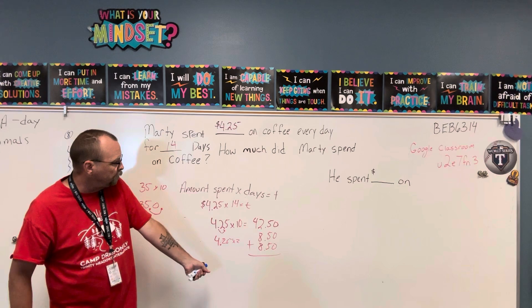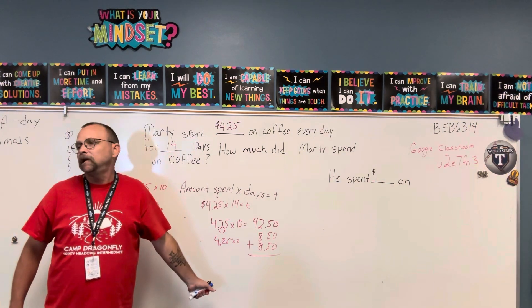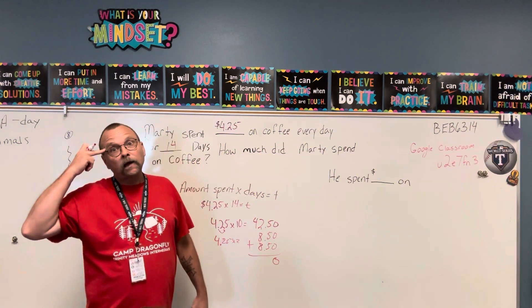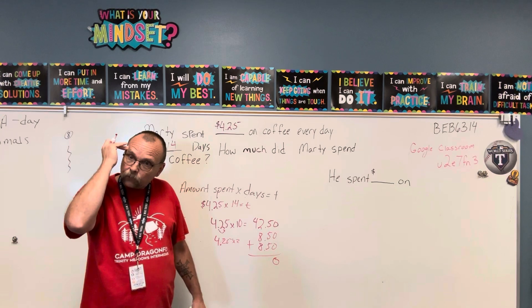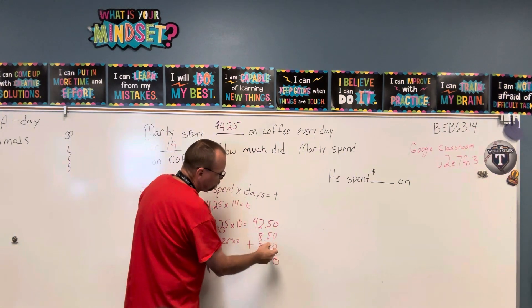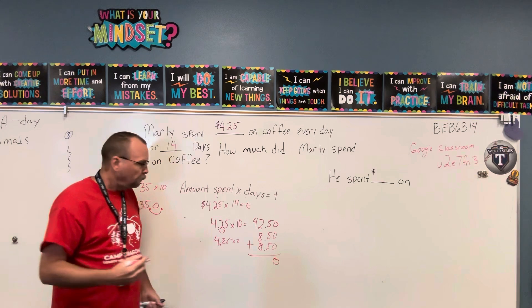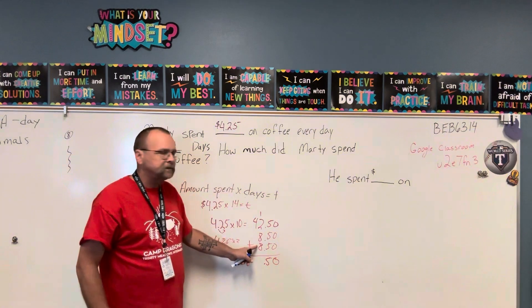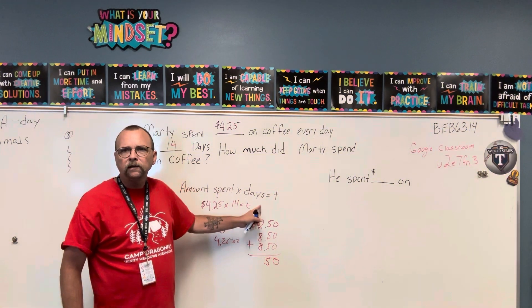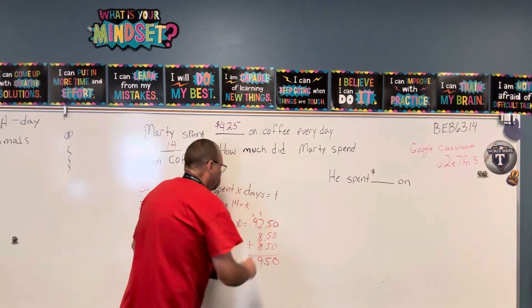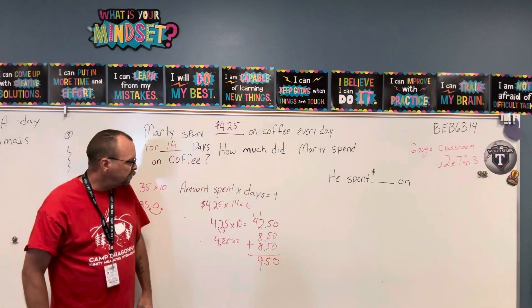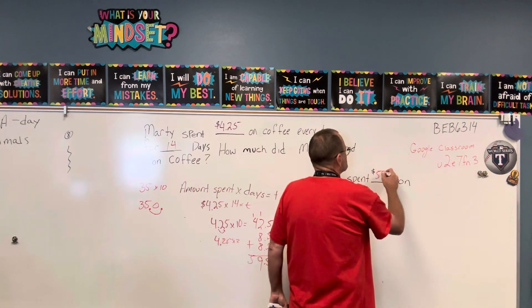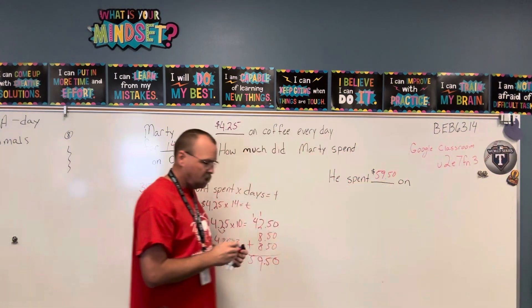The hardest thing I have to do now is add three numbers together. I have five, ten, fifteen tenths — that's five tenths and one whole. Eight and eight is sixteen, plus two is eighteen, plus one is nineteen. And then I carry the one, so now I have fifty-nine dollars and fifty cents. So he spent fifty-nine dollars and fifty cents on coffee.